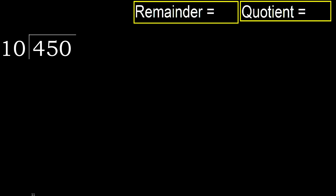450 divided by 10. 4 is less than 10, therefore next. 45 is not less, therefore with 45 and 10, multiply by which number is nearest to 45 but not greater?